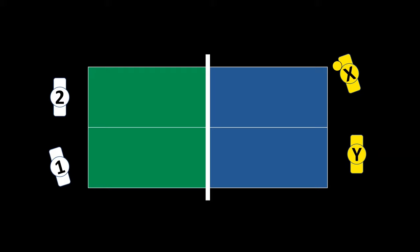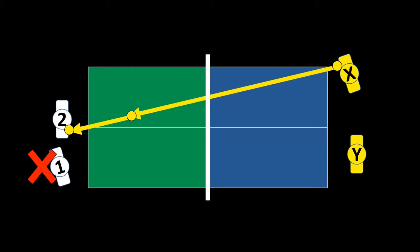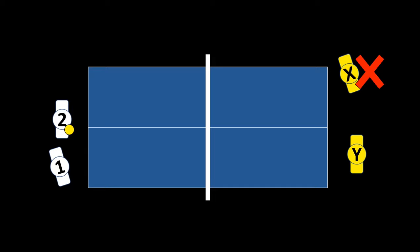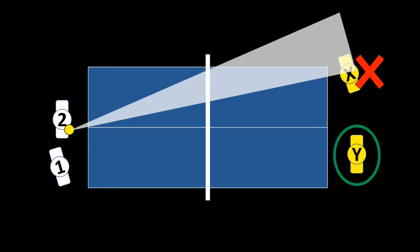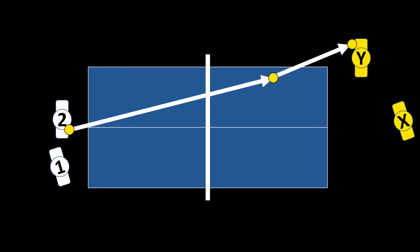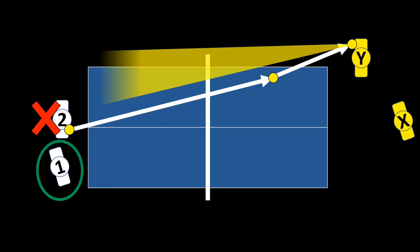In doubles, players must hit alternate shots. So if player one serves, player two from the other team receives. Then because player X hit, player Y must hit next — X cannot play two shots in a row. This alternating rule creates interesting tactics: player Y knows player one must hit the next ball, so Y aims to make it difficult for player one.